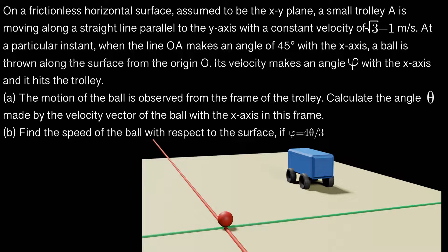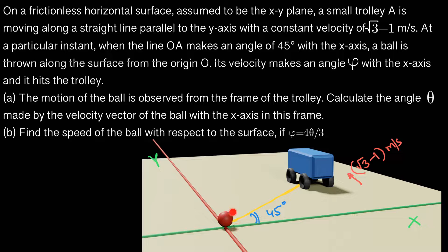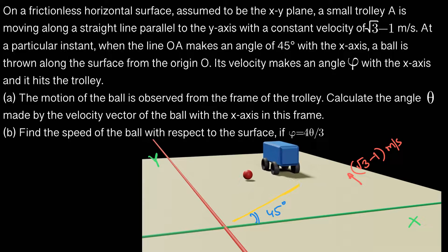Good morning. We are looking at a JEE 2002 question. A trolley is moving along the y-axis with speed √3 minus 1 meters per second. When this trolley just starts to move, the line joining this body and the trolley makes an angle of 45 degrees with the x-axis. Subsequently, this ball is projected in the xy-plane and it hits the trolley.